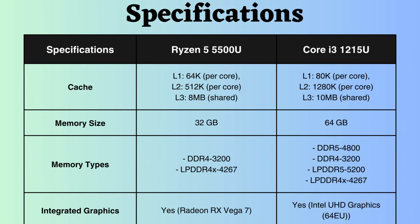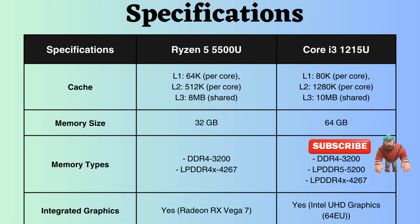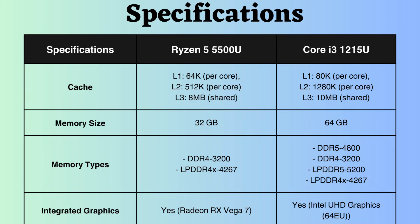The Intel i3-1215U surpasses the Ryzen 5500U in L1, L2, and L3 cache size, making it better suited for tasks requiring extensive data or featuring sequential access patterns. The Intel i3-1215U supports up to 64GB of RAM, whereas the Ryzen 5500U supports up to 32GB, suggesting that the Intel i3-1215U can handle high RAM loads more effectively.